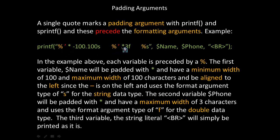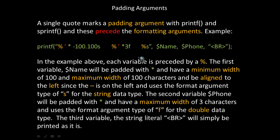In the example above, each variable is preceded by the percent symbol to indicate a formatting argument. The first variable, name, will be padded with an asterisk and have a minimum and maximum width of 100 characters, aligned to the left since the dash is on the left, and uses the format argument type of s for the string data type. The second variable, phone, will also be padded with asterisks and have a maximum width of three characters, and uses the format argument type of f for the double data type. The third variable, the string literal br or an HTML line break, will simply be printed as it is.